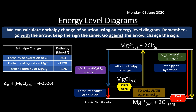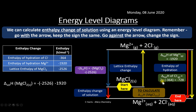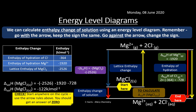Then going with the arrows downward: enthalpy of hydration of Mg²⁺ is −1920 kJ/mol (one mole), and we have two moles of Cl⁻, so 2 × (−364) = −728 kJ/mol. Adding all values: +2526 + (−1920) + (−728) gives an enthalpy of solution of −122 kJ/mol. As a check, putting all numbers including the answer around the full cycle should sum to zero.